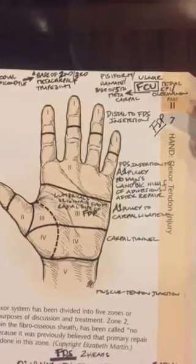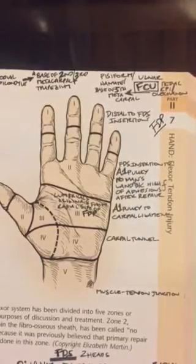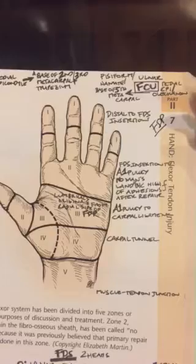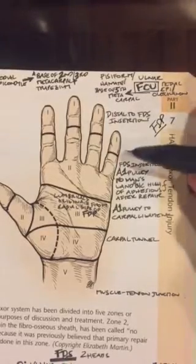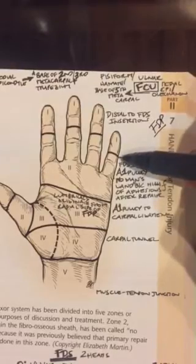The annular pulley, which are some of the pulleys that are important for keeping the flexor tendons in the position that they're in and do not prevent displacement when you flex your fingers. So zone two is from the FDS insertion site all the way to the A1 pulley.